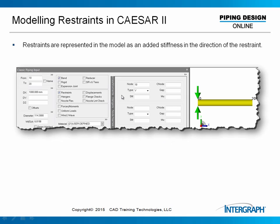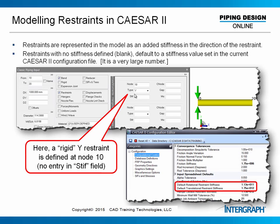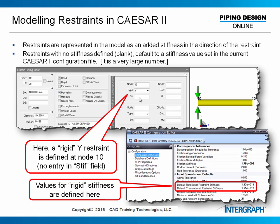In CAESAR II, you can model these restraints by clicking on restraint, specifying the node number and the type. The different types give either linear or nonlinear conditions. If you do not specify a stiffness, the program assumes a rigid restraint and puts in a very large stiffness value. From the configuration file, the default translational restraint stiffness is 1.75e12 newtons per millimeter — extremely stiff. Most structures you could construct will have a stiffness smaller than that. In piping systems where strain is a major concern, being stiffer is more conservative, particularly in thermal analysis.